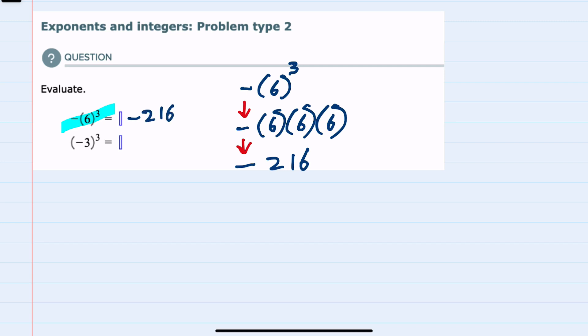In the second example, the negative is inside the parentheses, so here this will be negative 3 times negative 3 times negative 3. Multiplying left to right, negative 3 times negative 3 would be a positive 9.